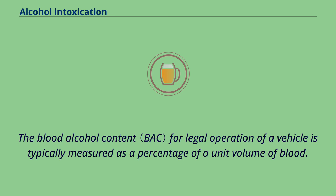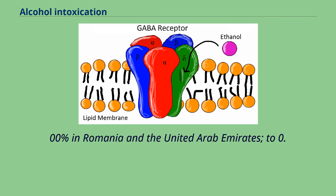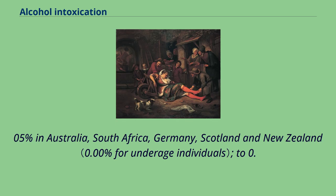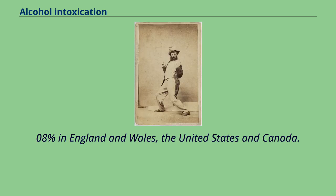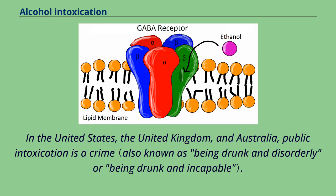The blood alcohol content for legal operation of a vehicle is typically measured as a percentage of a unit volume of blood. This percentage ranges from 0.00% in Romania and the United Arab Emirates, to 0.05% in Australia, South Africa, Germany, Scotland and New Zealand, to 0.08% in England and Wales, the United States and Canada. The United States Federal Aviation Administration prohibits crew members from performing their duties within eight hours of consuming an alcoholic beverage, while under the influence of alcohol, or with a BAC greater than 0.04%. In the United States, the United Kingdom, and Australia, public intoxication is a crime.